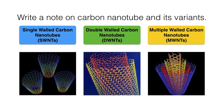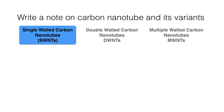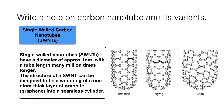Single-wall carbon nanotubes (SWNTs), double-wall carbon nanotubes (DWNTs), and multi-wall carbon nanotubes (MWNTs). Single-wall carbon nanotubes have a diameter of approximately one nanometer with a tube length many million times longer. The structure of single-wall nanotubes can be imagined as wrapping a one-atom-thick layer of graphite into a seamless cylinder.